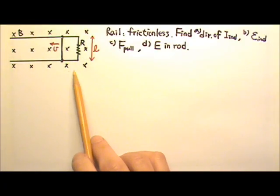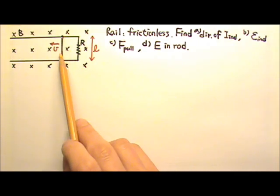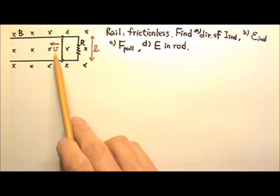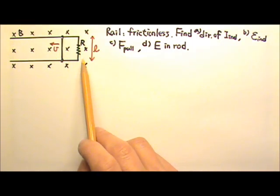This is a region with uniform magnetic field. A conducting rod with length L is being pulled to the left at a constant speed V along a frictionless conducting rail. There is a resistor with resistance R over here.